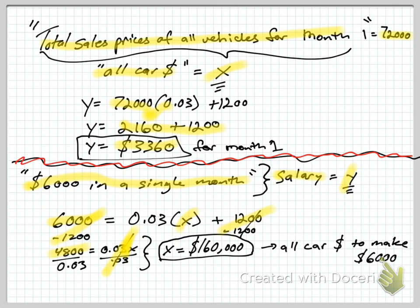So, he needs to sell $160,000 worth of cars in order to make $6,000 in a month. There you go.